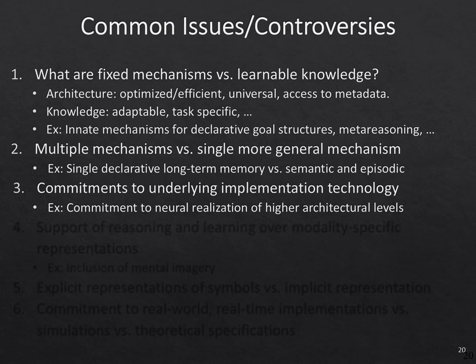Another big controversy is whether there are commitments to underlying implementation technology. In SOAR, we are agnostic on how all aspects of SOAR are implemented — whether it's in C, Python, or in neurons. We try to build a system with a specification that is independent of how it would be implemented underneath. In contrast, SPAUN is a system that takes the underlying level very seriously — that is where the main research is, and they ask how they can get other cognitive capabilities at the level above using those kinds of neurons. Systems like Sigma are in the middle, trying to achieve the same kind of cognitive level as SOAR but with a commitment to using factor graphs and graphical representations.